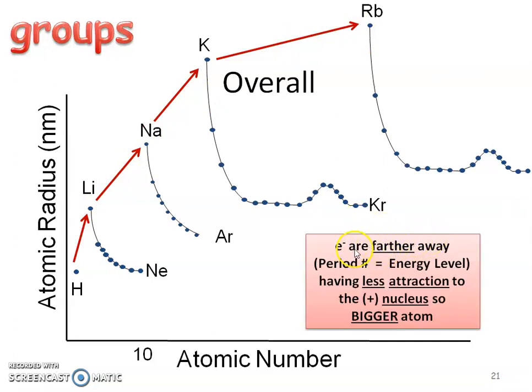So now the why. Electrons are going to be farther away from each other. Remember, that period number equals energy level. So there's going to be less attraction from that positive nucleus and those negative electrons. And so the atom is going to be bigger.